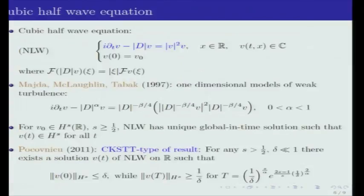Let me now continue with the second part of this talk, which is about the cubic half-wave equation written here. I'm considering this equation on R, and |D| here is simply a nonlocal operator corresponding to multiplication by the absolute value of the frequency ξ on the Fourier side. This is an equation which appears in physics in gravitational collapse and other things, and it is also in the same family as one-dimensional models of weak turbulence considered by Majda, McLaughlin, and Tabak.